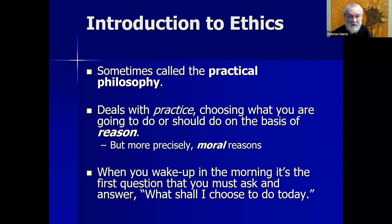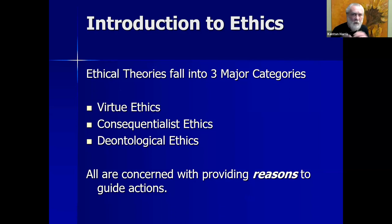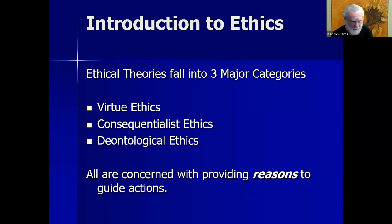Ethical theories fall into three major categories: virtue ethics, consequentialist ethics, and deontological ethics. If you were going to file the various ethical theories in Western philosophy, you would basically need three file folders. All three are concerned with providing reasons, but what reasons they think are relevant to guiding your actions differ — they differ as to what they consider the important reasons to consider.